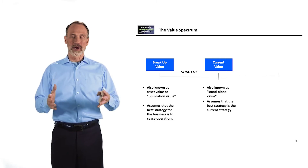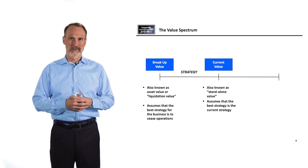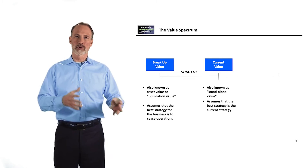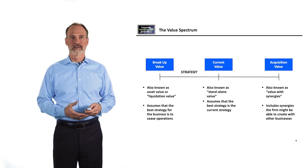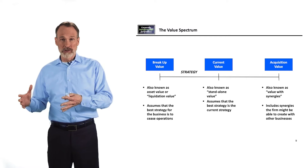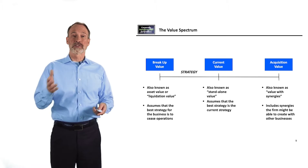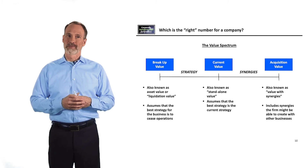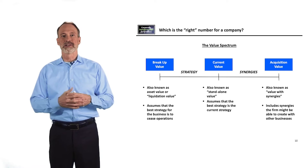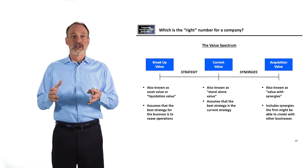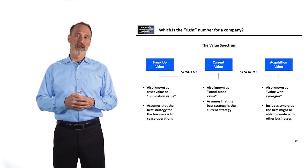Companies can also be worth more than their current strategy suggests — that's the reason we're all here. We're trying to identify acquisitions that could make targets worth more than their standalone values. To get from current values to acquisition values, you add synergies. Acquisition value, also known as value with synergies, includes synergies created in combination with another business. So the spectrum goes: breakup value, plus the value of strategies to get to current value, then plus the value of synergies to get to acquisition value.